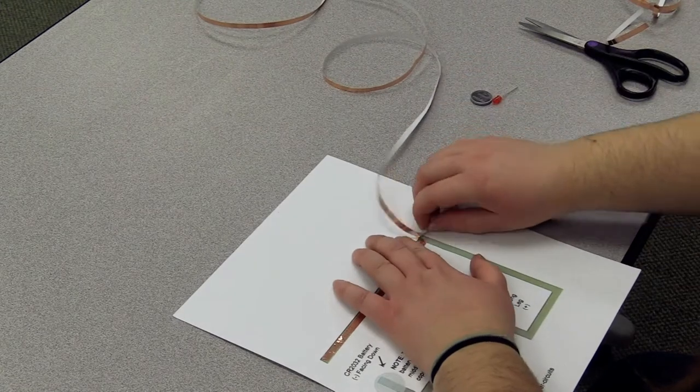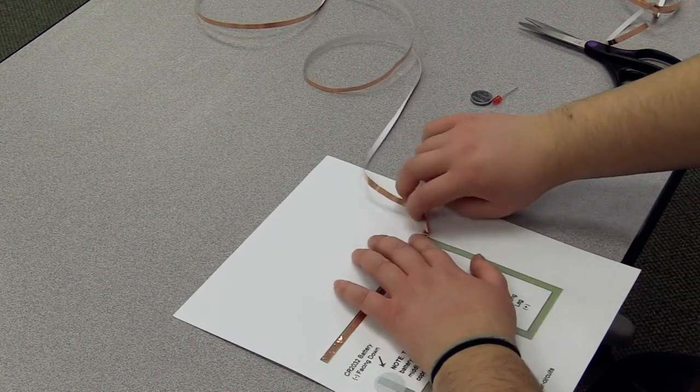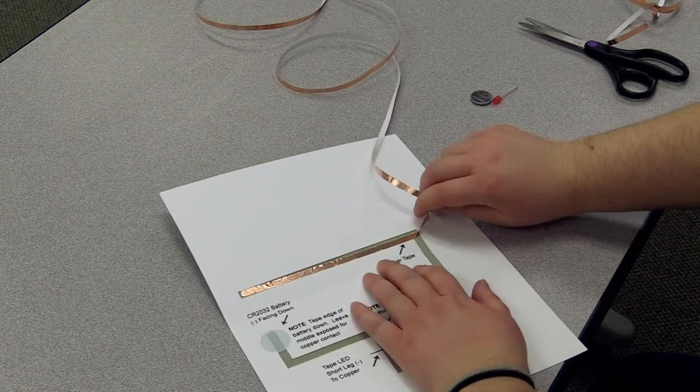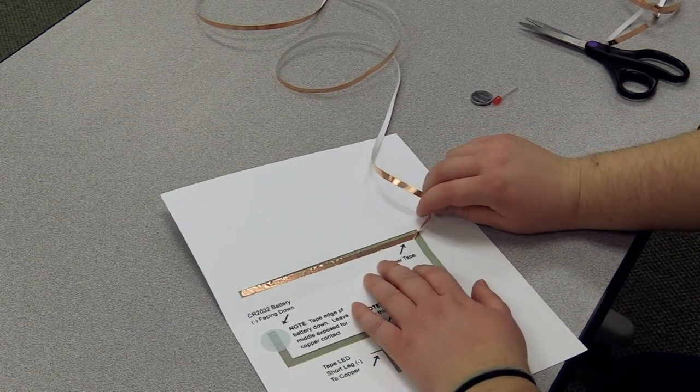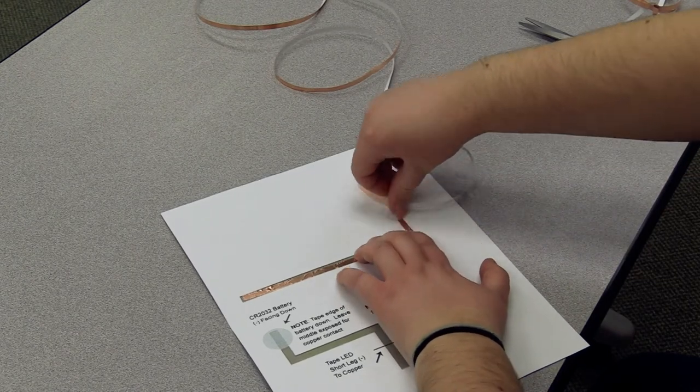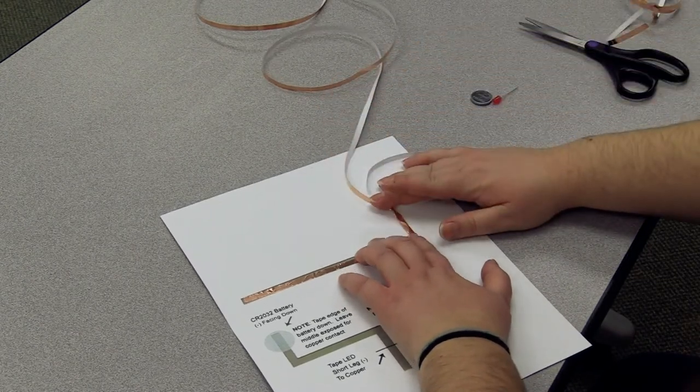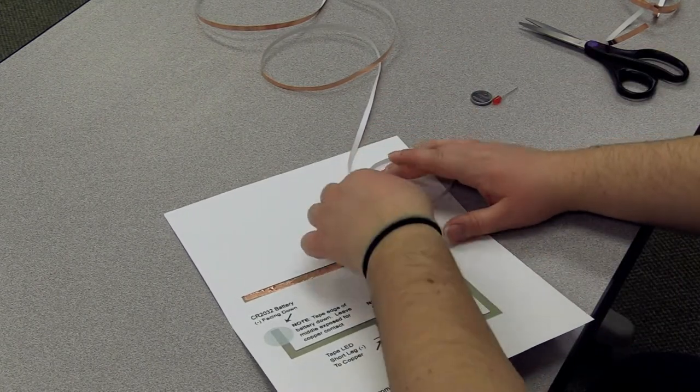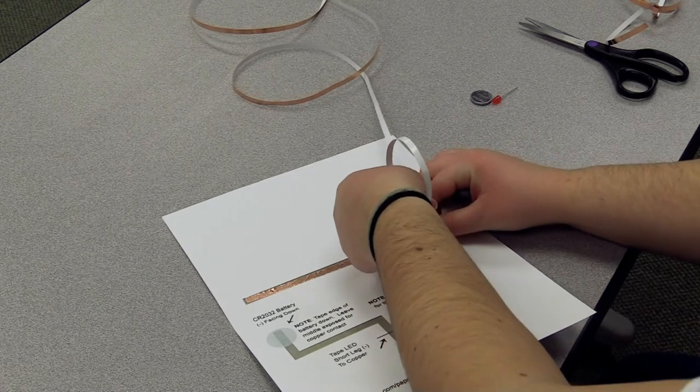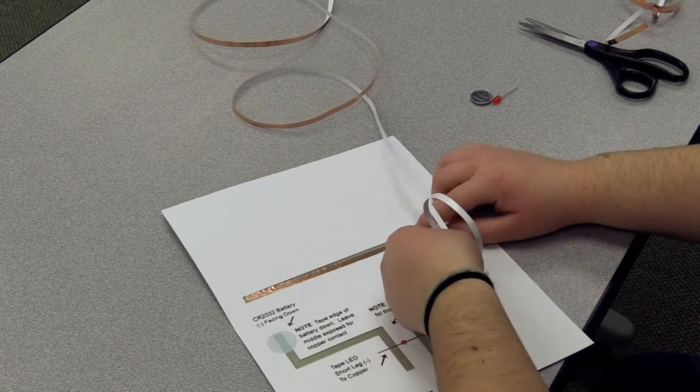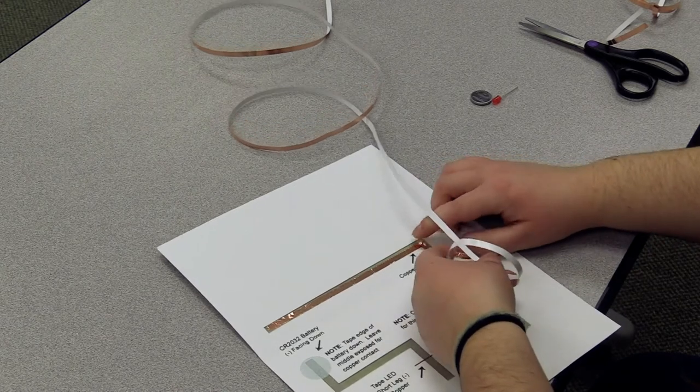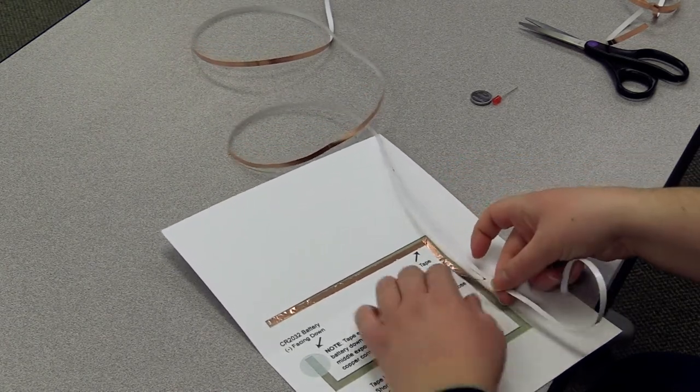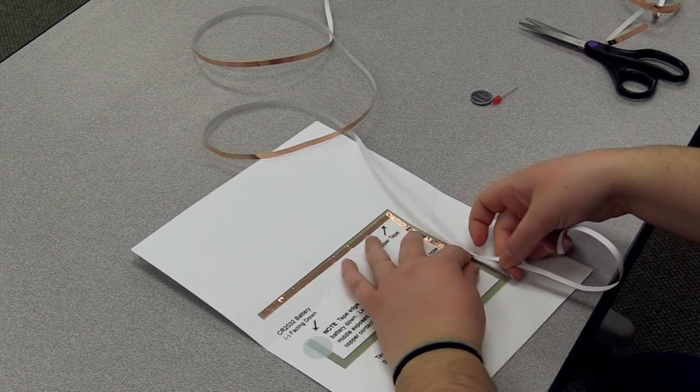Okay, so there's a couple ways that you can do the corners. I'm going to show you the more difficult way first. So what you're going to do so you don't have to cut the copper tape is you're just going to fold it up on a 45-degree angle like that. So I'll move my finger so you can see that. Just fold it up on that 45-degree angle. And then you're going to bring it back down at a 90-degree angle. So you're just going to cross it over like that. And then you're just going to continue along the path.